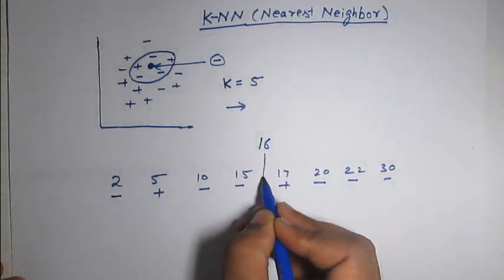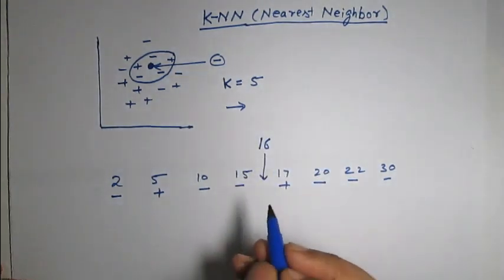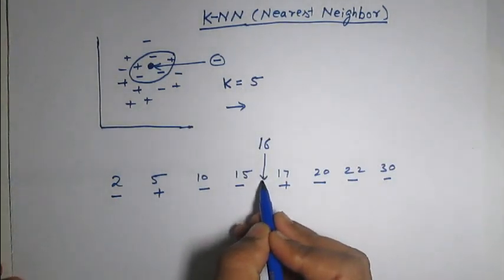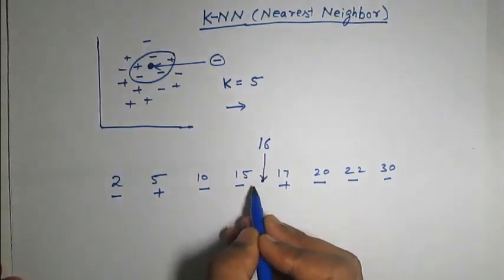Now 16 will appear somewhere here. Now suppose the value of K is equal to 5. So, we have to consider the 5 nearest neighbors to 16. Let us consider the 5 nearest neighbors.